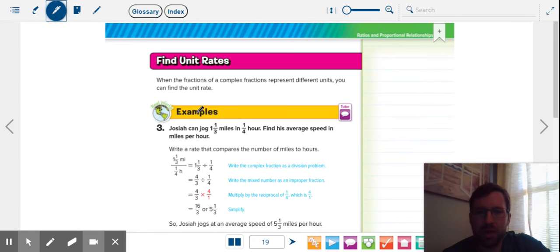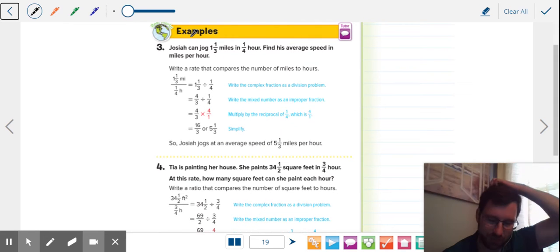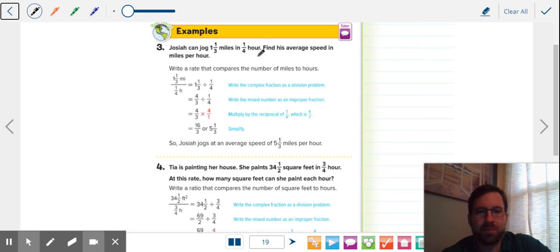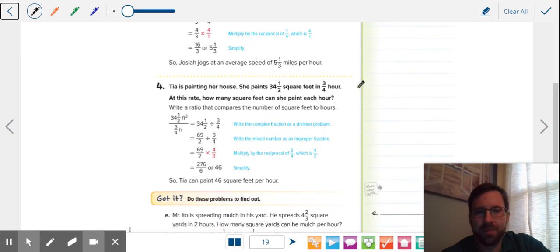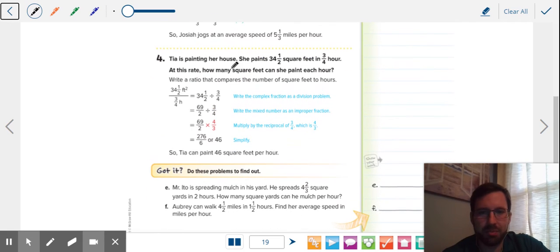When you get these in the real world, real world is very rarely whole numbers. You never run in an hour. Usually it's less than an hour, more than an hour to finish a race or a jog. Or like if you finish a project, Tia's painting her house. Took her three quarters of an hour. Didn't take her exactly an hour.